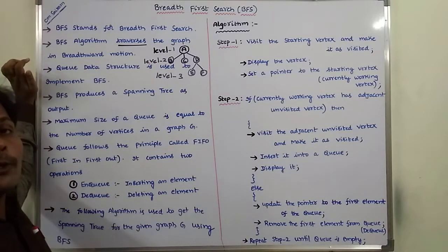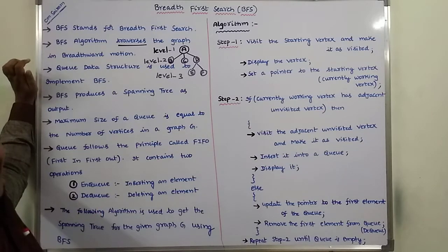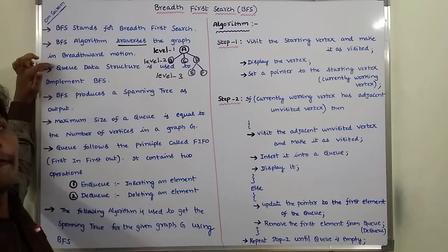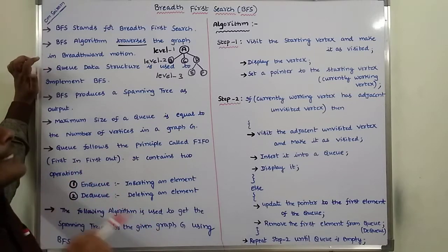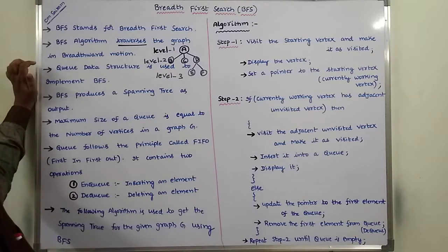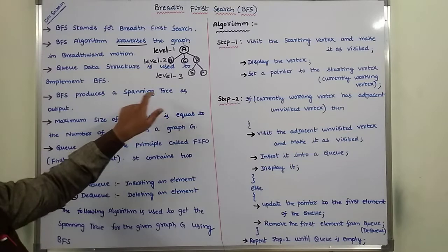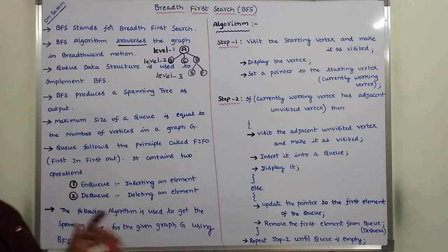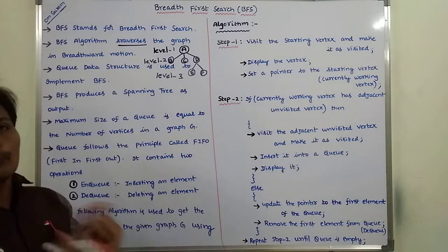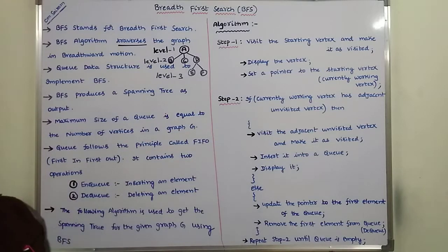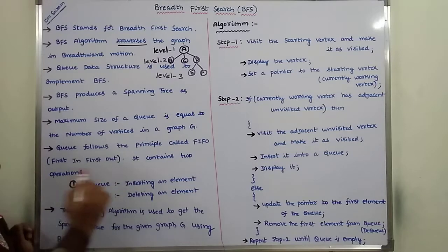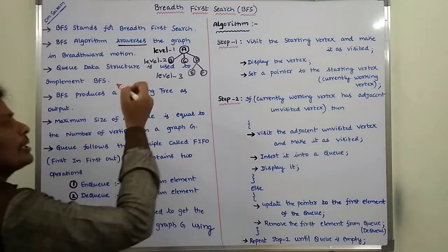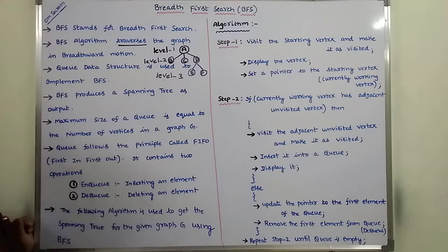A queue data structure is used to implement the Breadth First Search technique. A queue follows a principle called FIFO — First In, First Out — meaning whichever element is entered into the queue first, that element is taken out first. BFS produces a spanning tree as output. So the input for BFS is the given graph, and the output from BFS is a spanning tree.